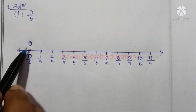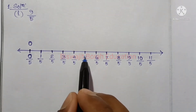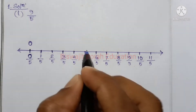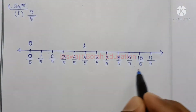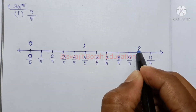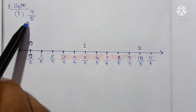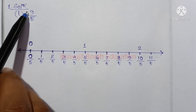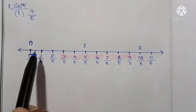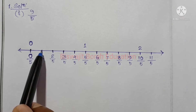0 divided by 5 is 1 divided by 5. So if you get 2, then you are at 1 divided by 5. So in this 1 divided by 5, which is 5 divided by 5, it is the same as 1 divided by 5.